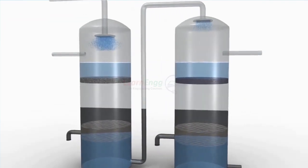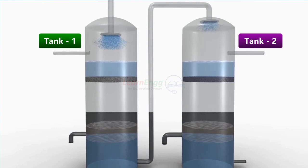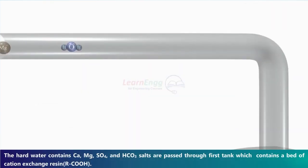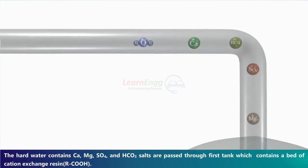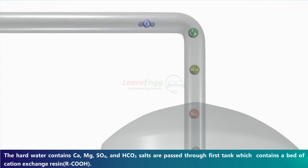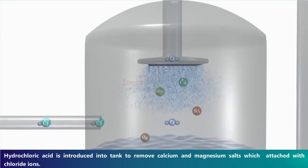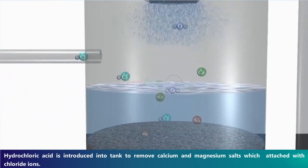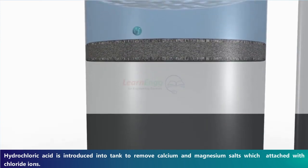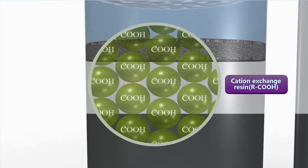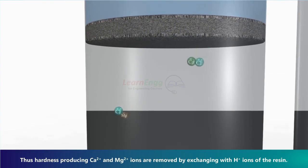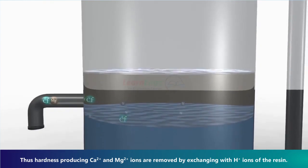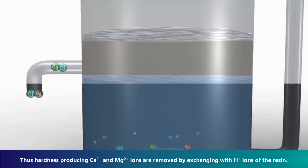Ion exchange process: hard water containing Ca²⁺, Mg²⁺, SO₄²⁻, and HCO₃⁻ salts is passed through the first tank, which contains a bed of cation exchange resin (R-COOH). Hydrochloric acid is introduced into the tank to remove calcium and magnesium salts attached to the resin. The hardness-producing Ca²⁺ and Mg²⁺ ions are removed by exchanging with H⁺ ions of the resin.